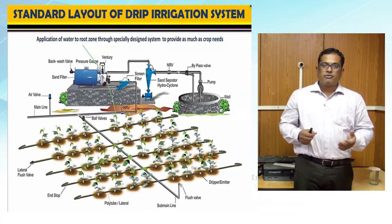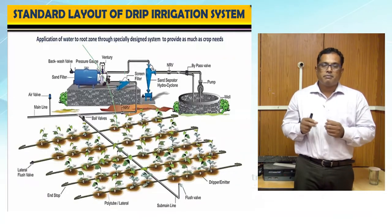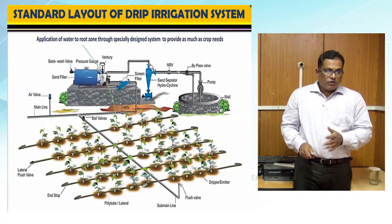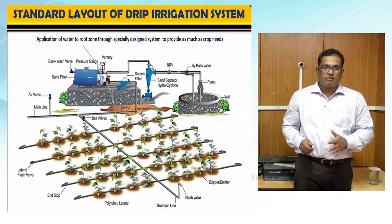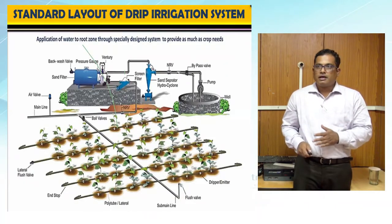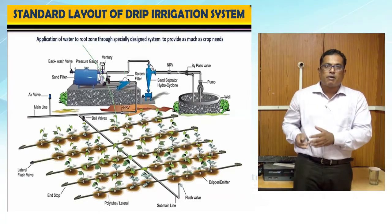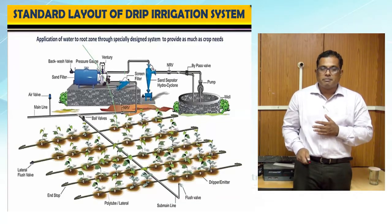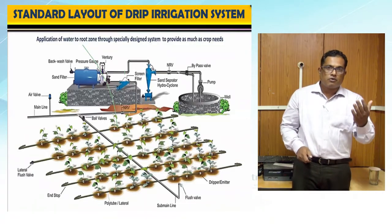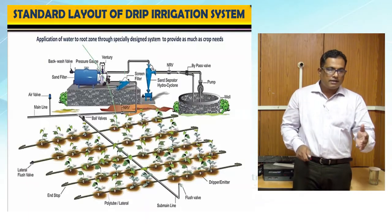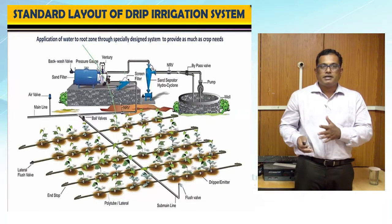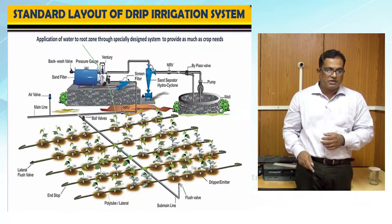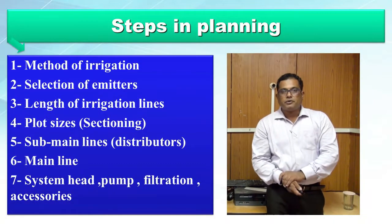Inline emitters are used for vegetables or closely growing crops, while online button-shaped emitters are used for wide-spaced crops like fruit crops. For designing a drip irrigation system, we go from part to whole — we first design the emitter, then the sub-main, then the main, and finally determine the kind of filtration required. This is the standard design convention.